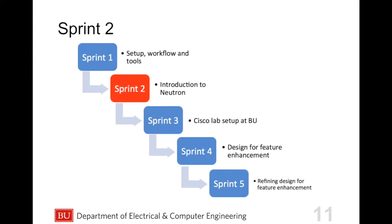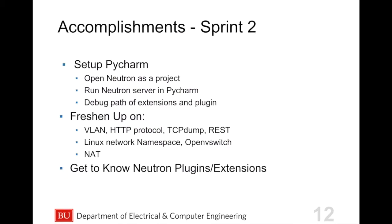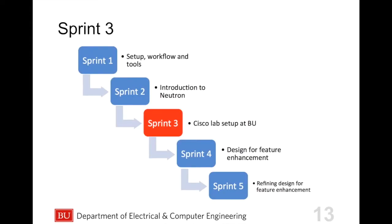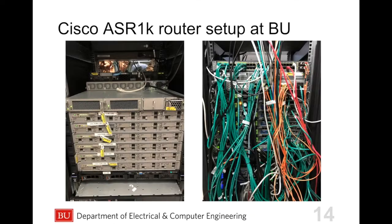Sprint 2 was more of an introduction to Neutron. We set up PyCharm and started doing some remote debugging. Cisco had us freshen up on networking protocols such as VLAN, HTTP, TCP dump, REST, Linux namespaces, OpenVSwitch, and NAT. Additionally, we worked on setting up the Cisco lab at BU. This process was a little tedious with some latency, but by the end of the sprint we had it set up and were ready to move forward.